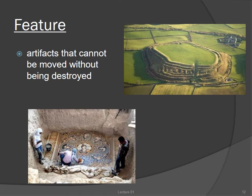The second kind of archaeological data is actually a kind of artifact, but it is special enough that we usually think of it as distinct. That's a feature. Artifacts are anything made or used by humans, but features are artifacts that cannot be moved without being destroyed — for example, a building, a storage pit, or a house.